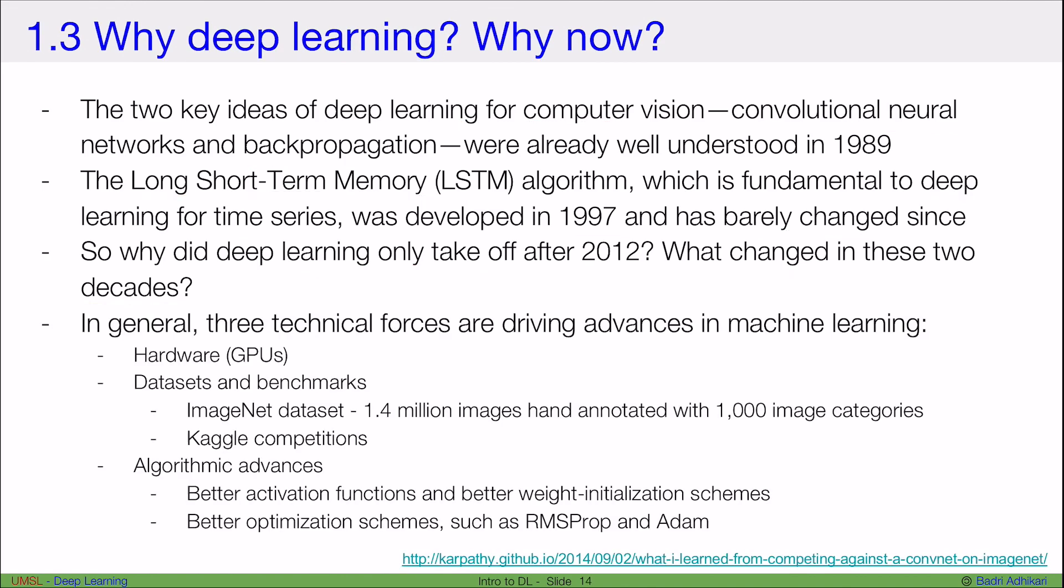The answer to this question is hardware, datasets, and algorithmic advances. So these three key technical forces are the driving advances in machine learning, which has led us to deep learning. Within hardware we now have GPUs which we didn't have in the 80s or 90s or even early 2000s and that's why deep learning became popular and it can do what it can do now.